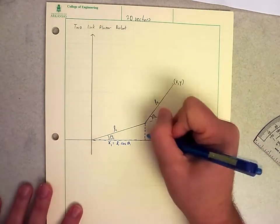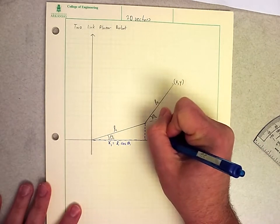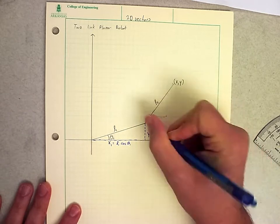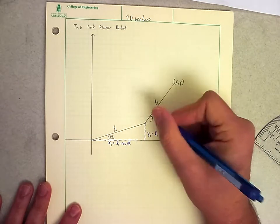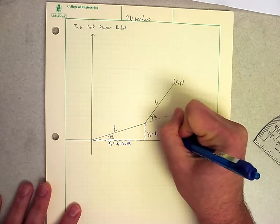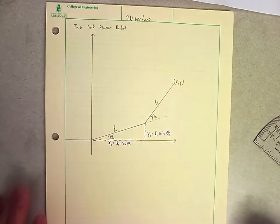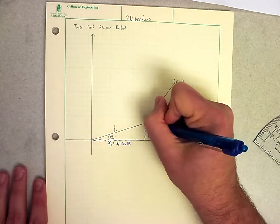And we know that the y value, I'm going to call that y1, is equal to the hypotenuse, L1, times the sine of this angle. So we know how we can get to this point here.